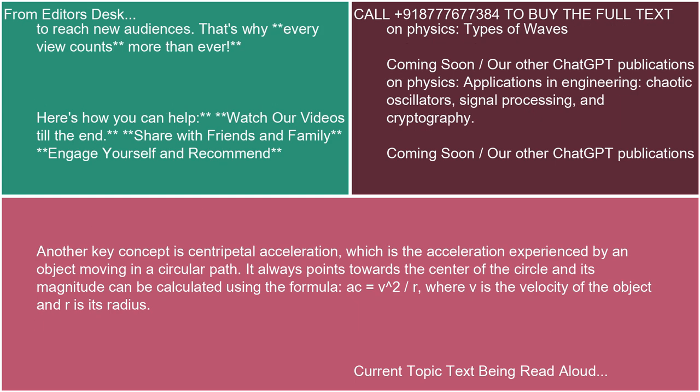Another key concept is centripetal acceleration, which is the acceleration experienced by an object moving in a circular path. It always points towards the center of the circle, and its magnitude can be calculated using the formula: AC = V² / R, where V is the velocity of the object and R is its radius.